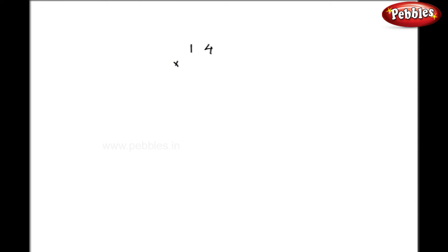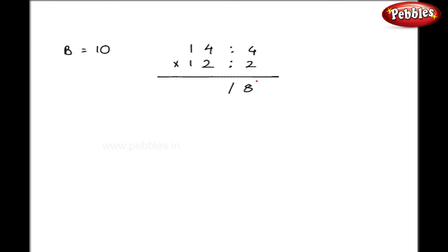Now let us take one example where both numbers in the multiplication are greater than the base. I will take 14 and 12. In this case my base is equal to 10. Since 14 and 12 are both greater than the base, the rest of the method is the same: 14 minus 10 is 4, 12 minus 10 is 2. So I get 4 into 2 equals 8, and 14 plus 2 is 16. So my final answer is 168.